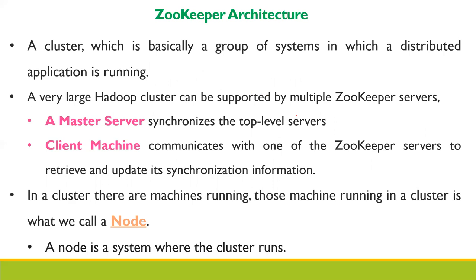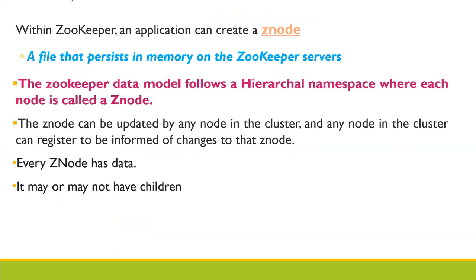A cluster is a group of systems on which a distributed application is running. A very large cluster can be supported by multiple Zookeeper servers. The machines running in a cluster are called nodes. Within a node, an application creates a Z-node — a file that persists in memory on the Zookeeper server. A Z-node can be updated by any node in the cluster, and any node in the cluster can register to be informed of changes to the Z-node.